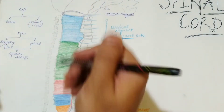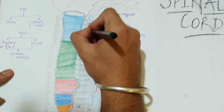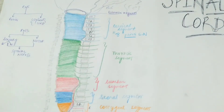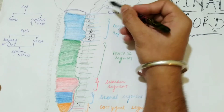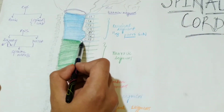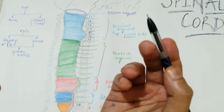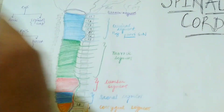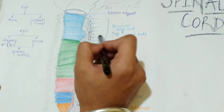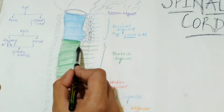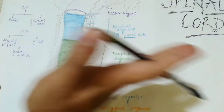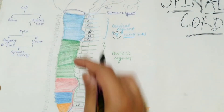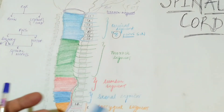There are seven cervical vertebrae but eight cervical spinal nerves. The reason is that C1 spinal nerve originates above the C1 vertebra — between the foramen magnum and C1 — not below it. That is why the last one exits just above T1. In the cervical segment, all spinal nerves originate above their corresponding vertebrae, whereas from the thoracic region downward, they originate below their vertebrae.